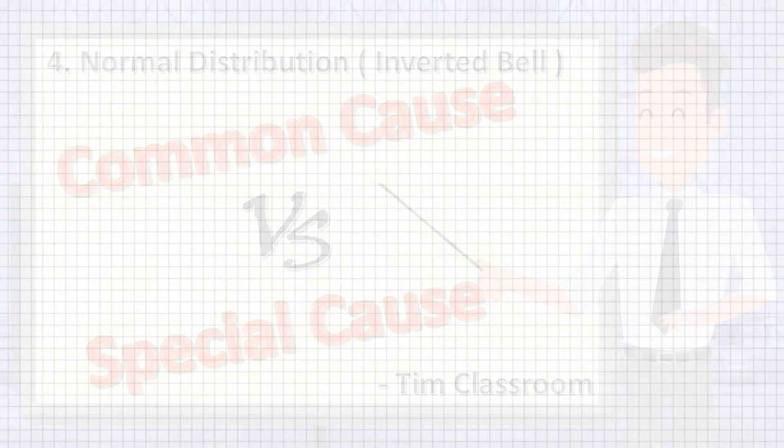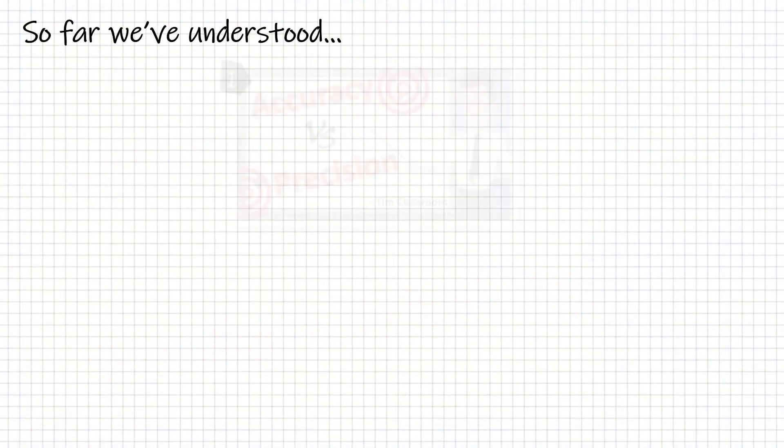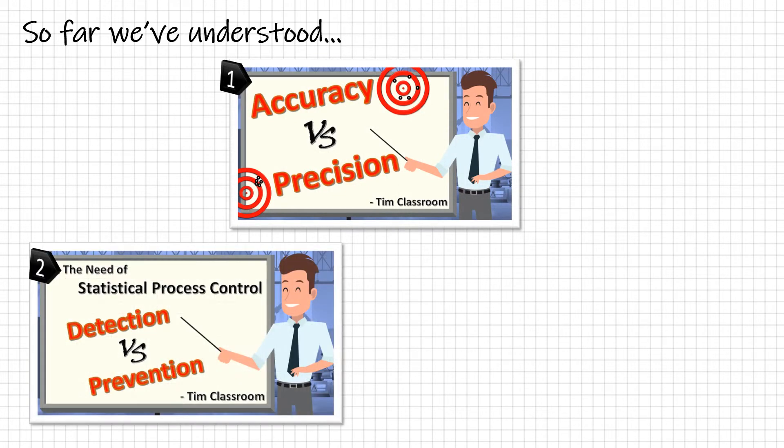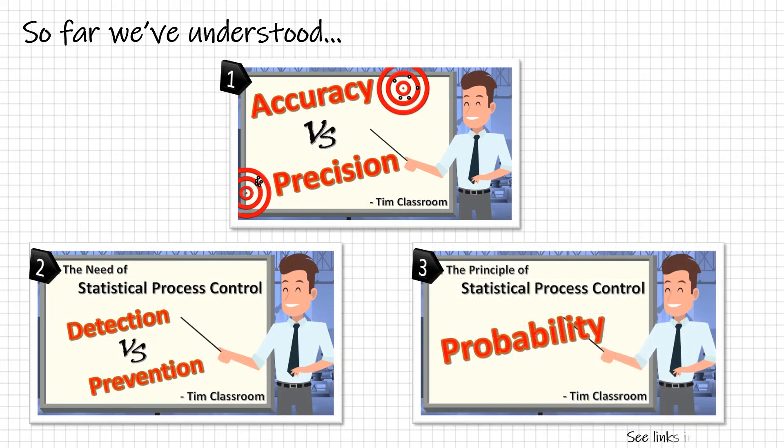Welcome back. Now that we have understood the difference between accuracy and precision and the building blocks of statistical process control, let's move to learn the concept of variation.